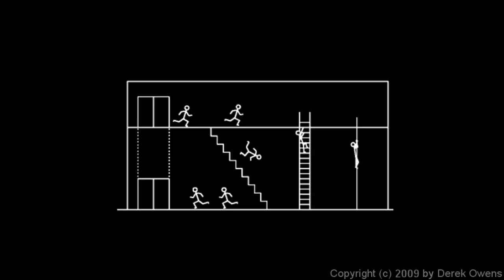Now also look at this building. There's an elevator on the left side that carries people up to the top floor — there are only two floors in this building. But there are three ways for people to get down: some go down the stairs, some go down the ladder, and some slide down this pole. All of them rejoin and come back to the elevator, which takes them back up to the top.